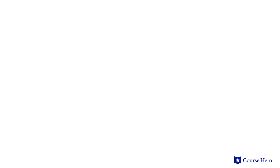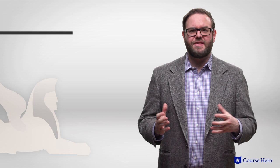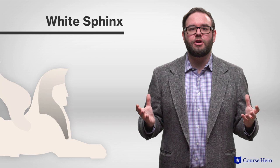Another symbol is the white sphinx, which is the first thing the time traveler sees upon arriving in the future. Simultaneously fantasy, guardian, warning and ancient mystery, the mythical creature combines lion, human and eagle. It foreshadows the Eloi and Morlock, who themselves are human-animal hybrids.